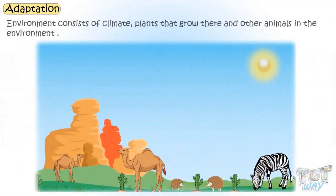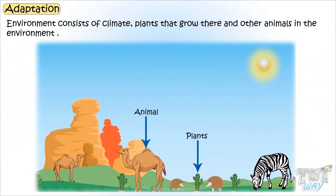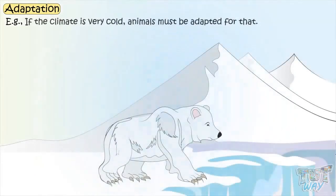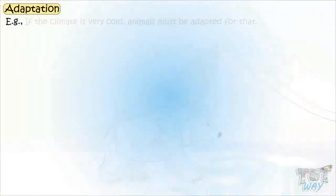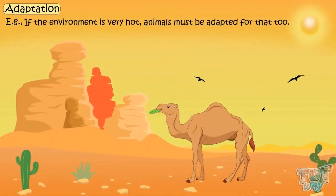Environment consists of climate, plants that grow there, and other animals in the environment. For example, if the climate is very cold, animals must be adaptive for that. And if the environment is very hot, animals must be adapted for that too.